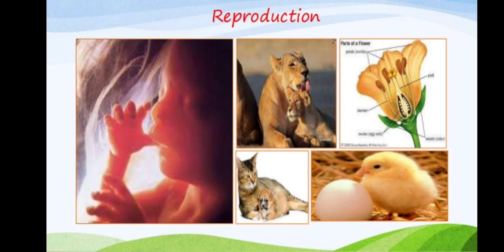Good morning children, welcome to your biology class. Dear students, today we are going to start with our next chapter, that is chapter number 8: How do organisms reproduce? So far we have completed two chapters of our biology. First was life processes, second was control and coordination. So this is our next chapter: How do organisms reproduce?